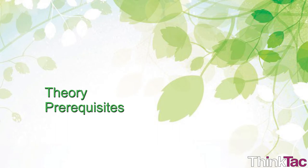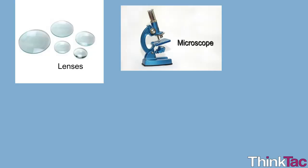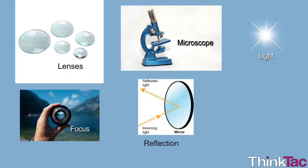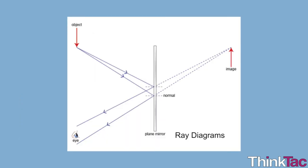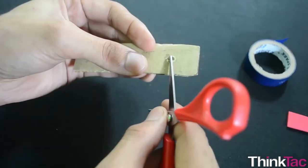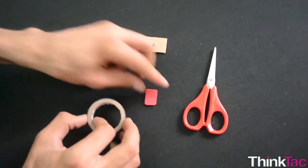Some theory prerequisites: you should have a basic idea of the terms like lens, microscope, light, focus, image, reflection, etc. A basic idea about ray diagrams. Some basic knowledge about the parts of a plant like roots, leaves, stem and their function. And simple motor skills like using a pair of scissors safely, handling adhesive tapes, etc.